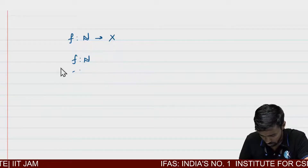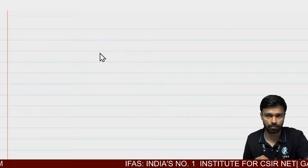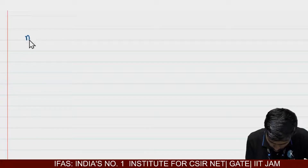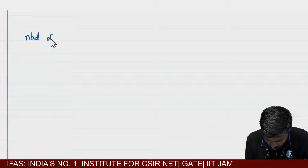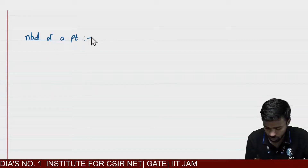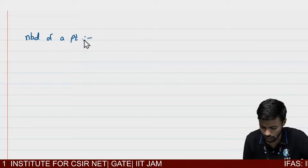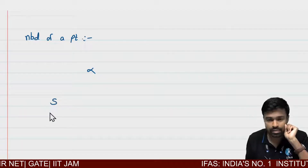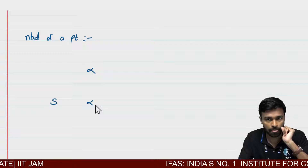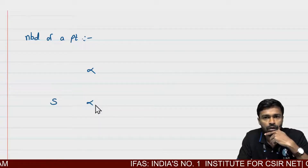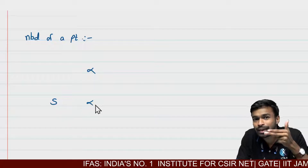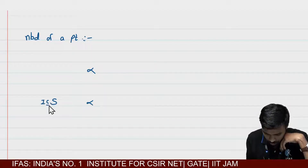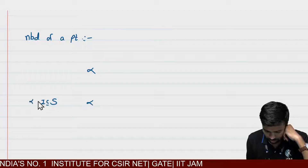So let us define the definition of limit point. But before that, what is a neighborhood? Let us discuss the neighborhood of a point. So if you have some particular point, let us say alpha, and you have a set S — S is a neighborhood of alpha when there exists some open interval I which is a subset of S and that interval contains alpha.